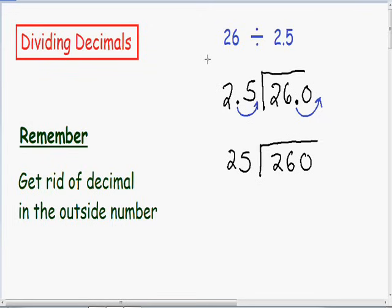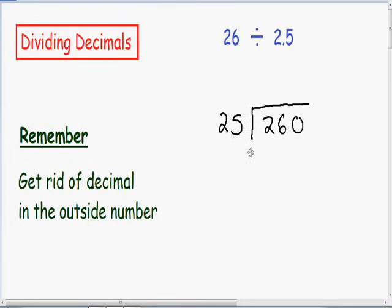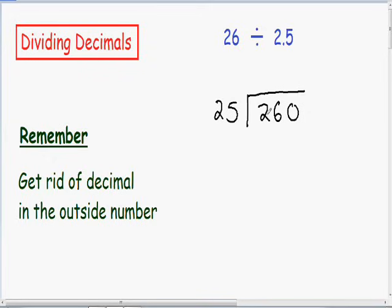So now I'm just going to give myself a little bit more space and erase this. And I'll move this a little farther up. So now we can divide this using normal long division. 25 goes into 2 zero times since 25 is bigger than 2. So we have to move on to the next digit.